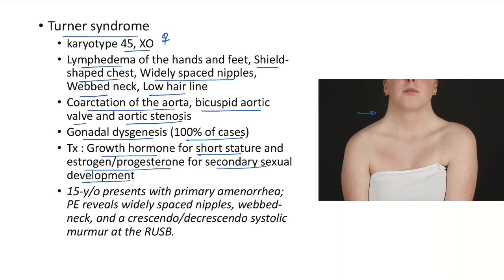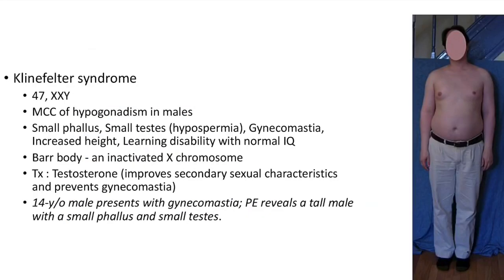Clinical case of Turner syndrome: 15-year-old presents with primary amenorrhea. Physical examination reveals widely spaced nipples, webbed neck, and a crescendo-decrescendo systolic murmur at the right upper sternal border. This murmur can be due to aortic stenosis.